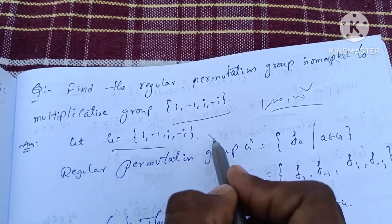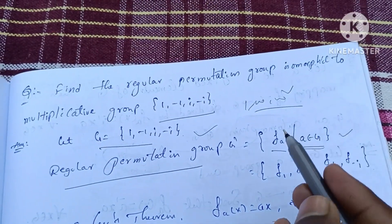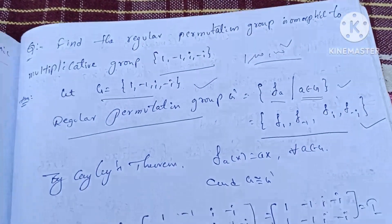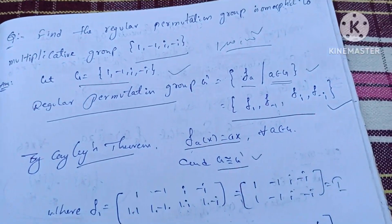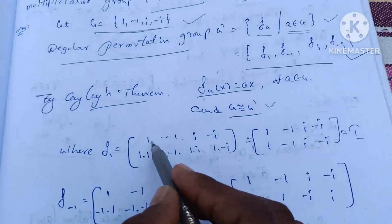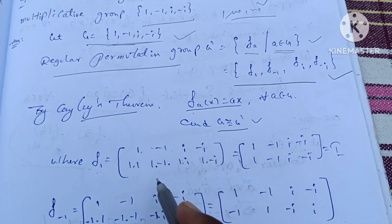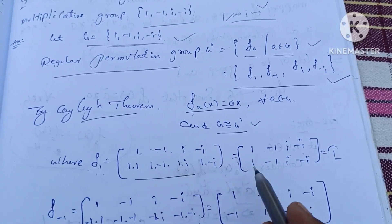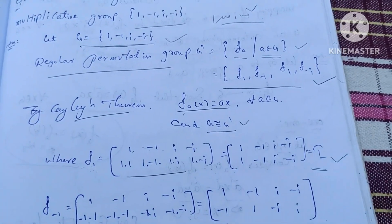Let g be equal to that. The regular permutation group g dash is equal to the element formation. We find f_1, f_{-1}, f_i, f_{-i}. We find the set formation using f_a of x equal to ax, and g isomorphic to g dash. First, f_1: the domain elements are 1, -1, i, -i. So 1 into 1 gives 1, 1 into -1 gives -1, 1 into i gives i, 1 into -i gives -i. This is equal to the identity permutation.